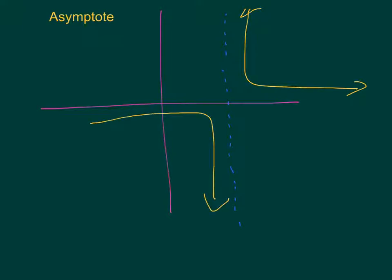So I can have a function that perhaps is going to get very close to that asymptote. Maybe this is what my rational expression looks like, but it is never going to cross that vertical asymptote.